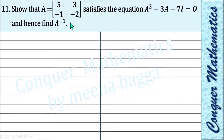I hope you can do it. Pause, try it yourself, then verify from here. A matrix is given to us — first row elements 5, 3 and second row elements minus 1, minus 2.